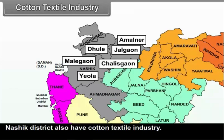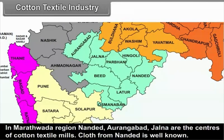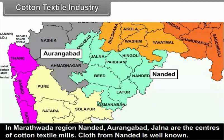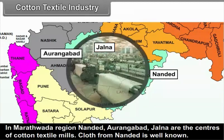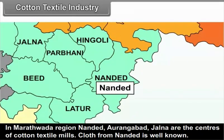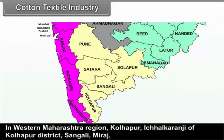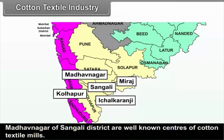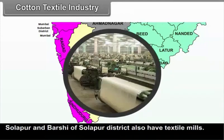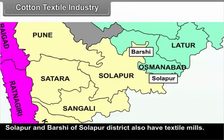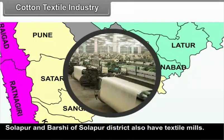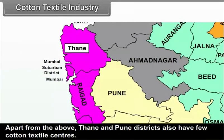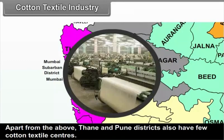Besides this, Malegaon and Yeola of Nashik district also have cotton textile industry. In the Aurangabad Division, Marathwada region, Nandur, Aurangabad and Jalna are the centres of cotton textile mills. Cloth from Nandur is well known. In the Pune Division, Western Maharashtra region, Kolhapur, Ichalkaranji of Kolhapur district, Sangli, Miraj and Madhavnagar of Sangli district are well known centres. Solapur and Barshi of Solapur district also have cotton textile mills. Thane and Pune districts also have a few cotton textile centres.